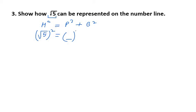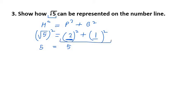We need to choose perpendicular and base values such that we get (√5)² = 5 on the left-hand side. Taking base as 1 unit, so 1² = 1, and perpendicular as 2 units, so 2² = 4. Since 4 + 1 = 5, the left-hand side and right-hand side are equal.